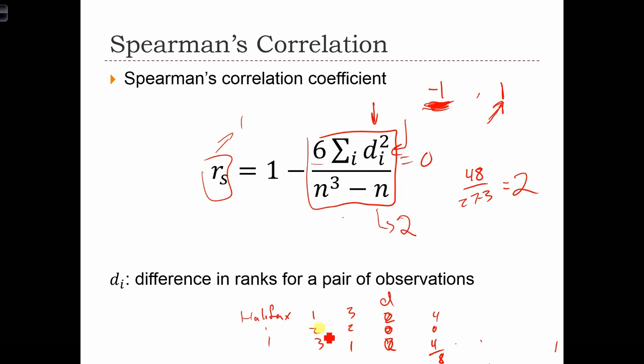So when the ranks are totally the same, correlation is going to max out at 1, and when they're complete opposites, correlation is going to be minus 1.